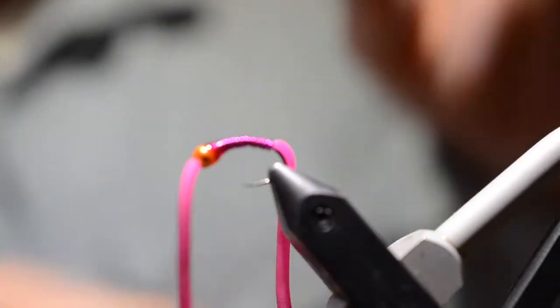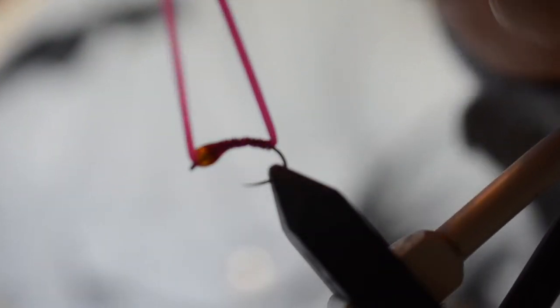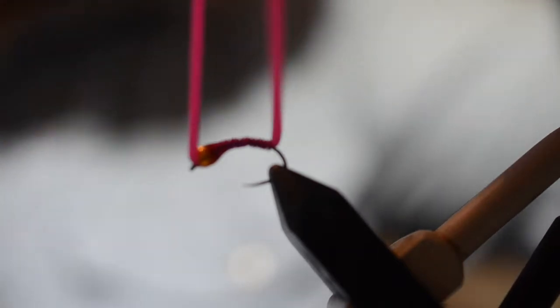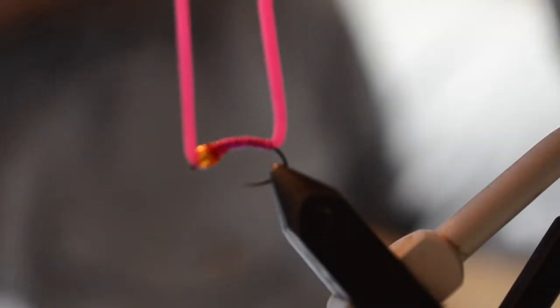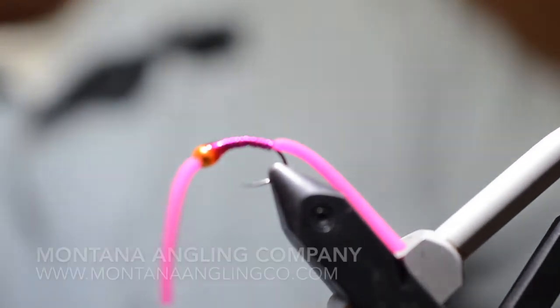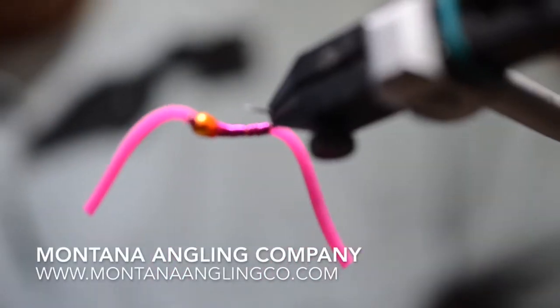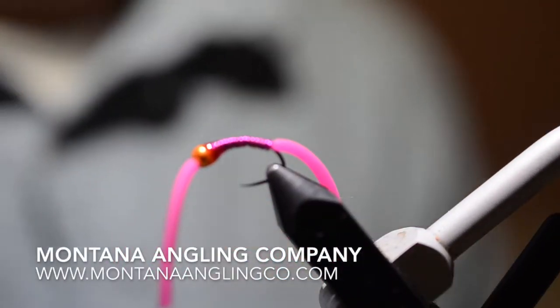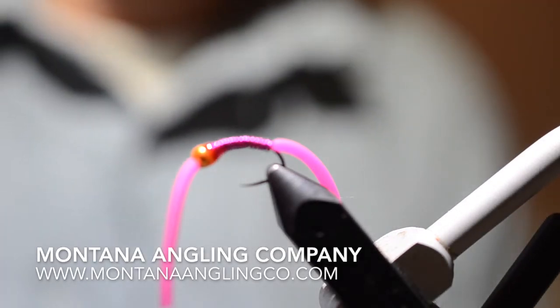And then I'll just kind of trim these parts. Nothing particular. I like, like I was saying, leaving them on the longer side, but just to be aesthetically pleasing, kind of matching the length. There we are. The Montana Angling Company Squirmy Wormy. Get out there. Do some fishing with it. See you next time.